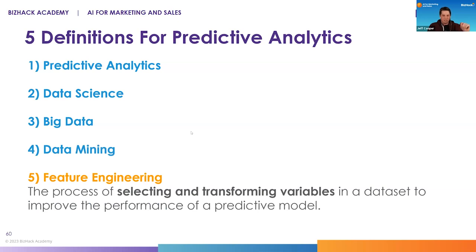Finally, we'll talk about feature engineering, a concept relevant to both artificial intelligence and data science and predictive analytics. Feature engineering is essentially the process of selecting and transforming variables that you feed into different predictive models. For example, if you're trying to predict the rate of cancer in a population, you can look at age, gender, economic status, or political leanings — but not all of that information is useful. Sometimes variables are highly correlated, and if you feed a bunch of junk into a machine, it can produce junk as the output.